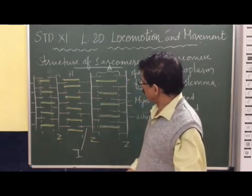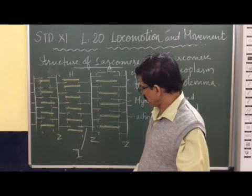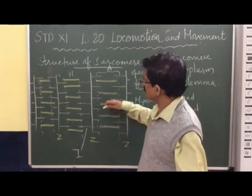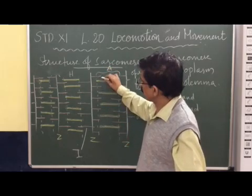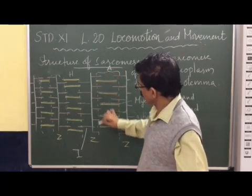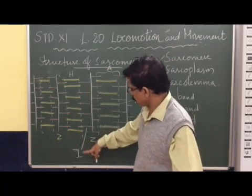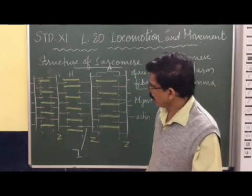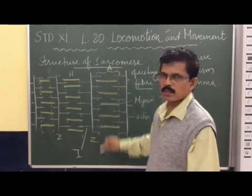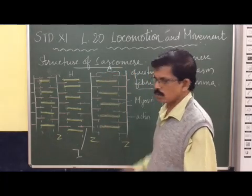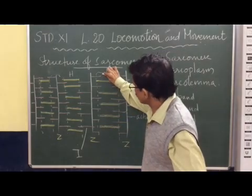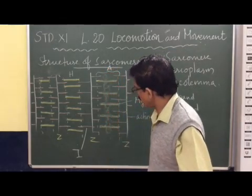Then there is the A-band. The A-band represents the region in the sarcomere where myosin and a portion of actin overlap. So the A-band is the overlap region of actin and myosin. At the center of the A-band you can see the myosin-only region, which is called the H-zone.